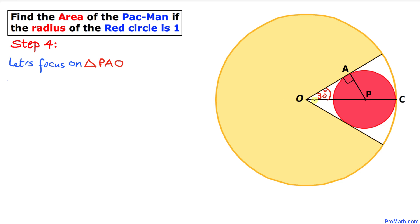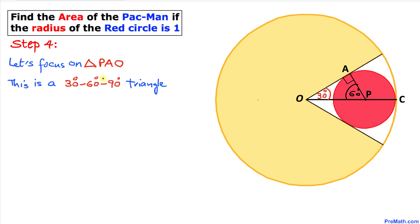Now let's focus on triangle PAO. Angle A is 90 degrees, angle O is 30 degrees, and since the sum of angles in any triangle is 180 degrees, angle P is going to be 60 degrees. Therefore, triangle PAO is a 30-60-90 degree triangle.